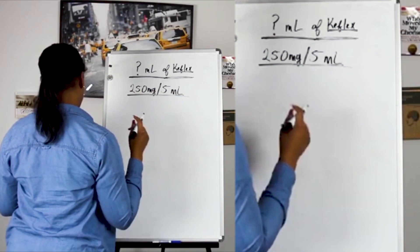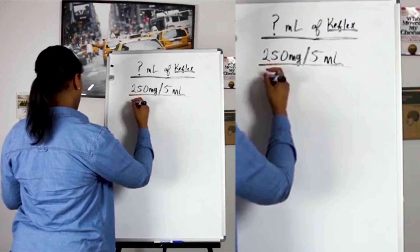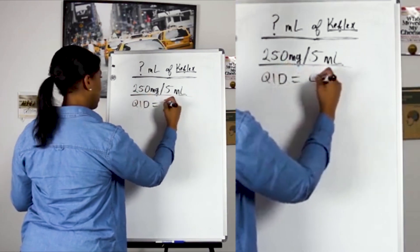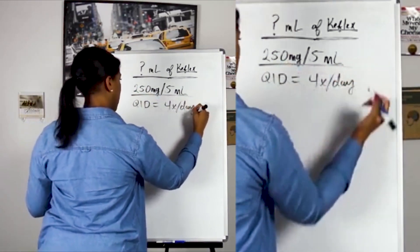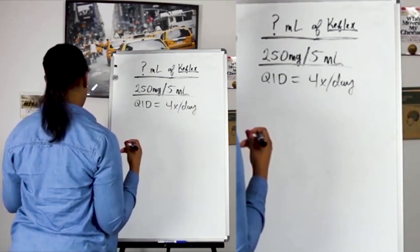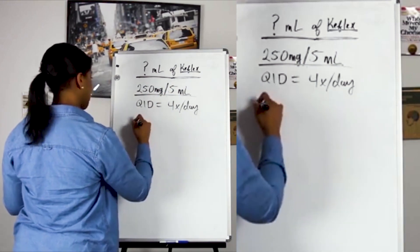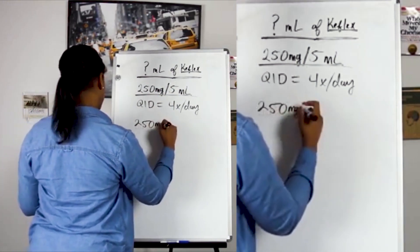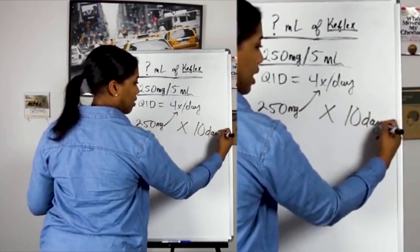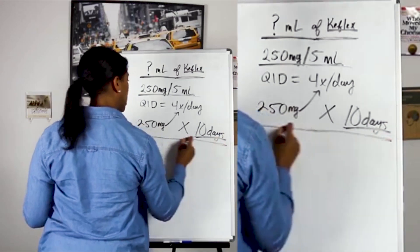Something else that we know is that they would like to know the amount for QID, which is actually four times per day. So if they're asking us how many milliliters of this concentration should be dispensed if the patient is going to be taking 250 milligrams four times a day for 10 days, just follow me.